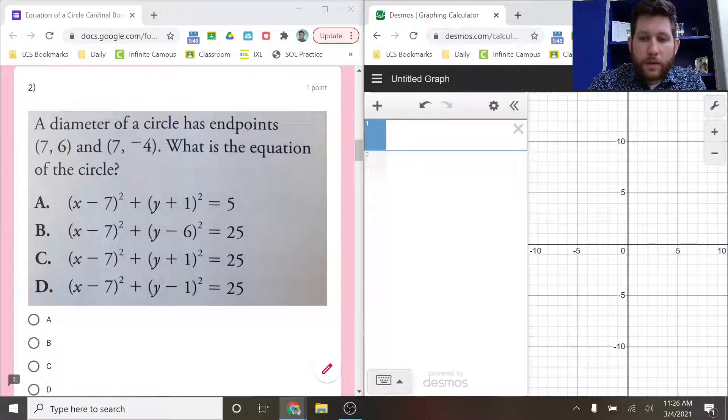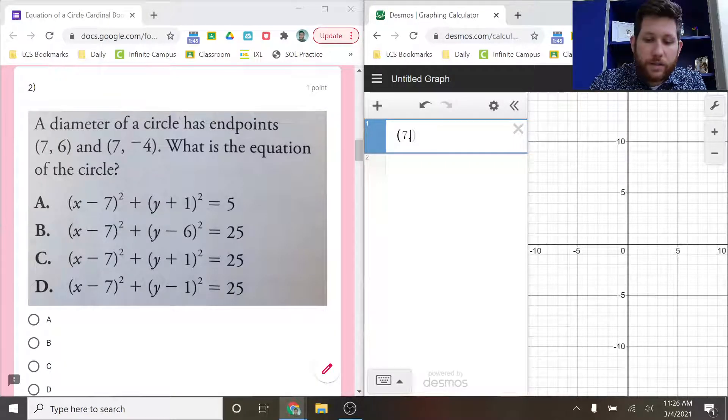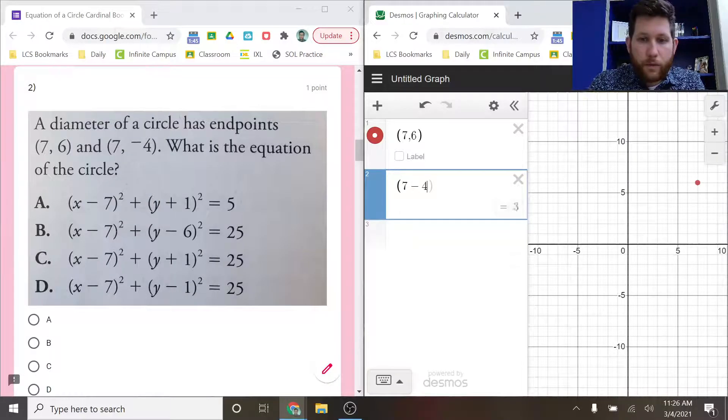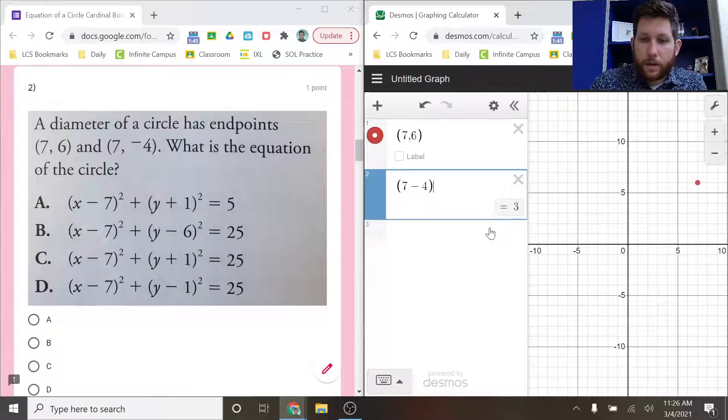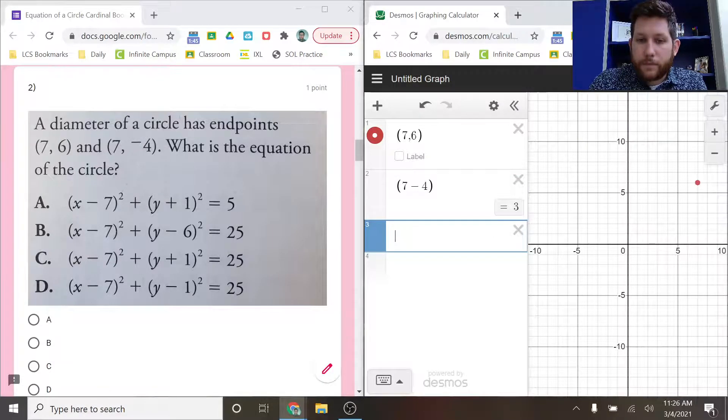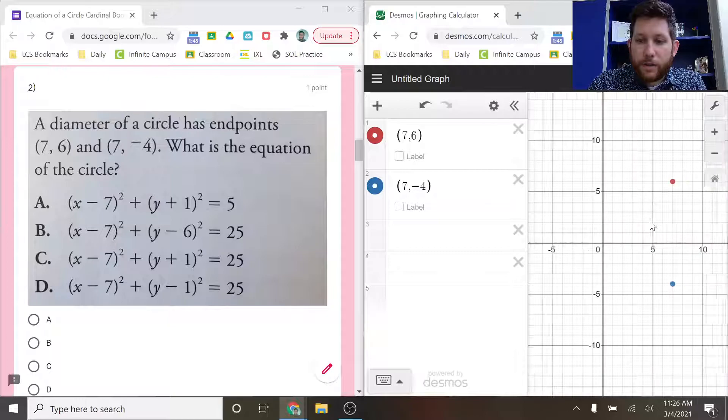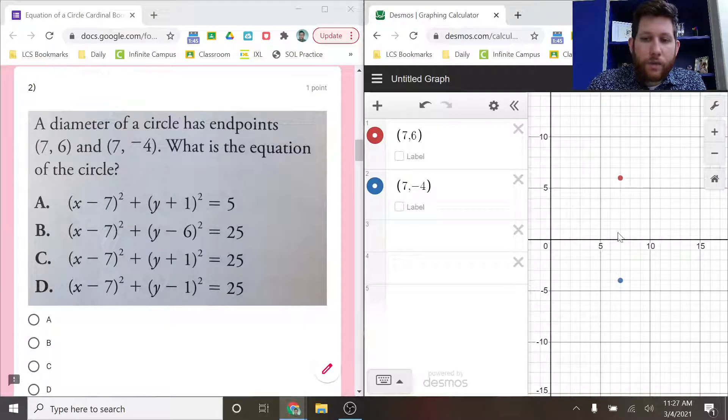What I can do in Desmos is I can start by making these points. Notice there's no spaces or anything like that. I'm just putting these points on my graph. (7,-4). Take a look. Oops, sorry. Missed my comma there. You do need to make sure you have your comma. Notice I've got two points on my graph.